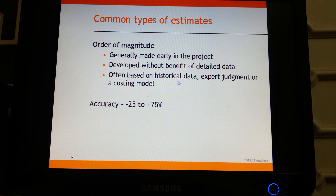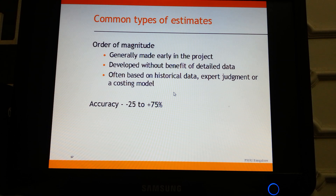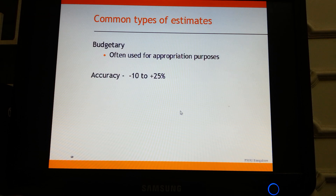Some common types of estimates: the order of magnitude estimate is generally made very early in the project, developed without the benefit of detailed data, and is often based on historical data, expert judgment, or a costing model. This is also known as a ballpark estimate and is very inaccurate — the expected accuracy level is minus 25 to plus 75 percent.